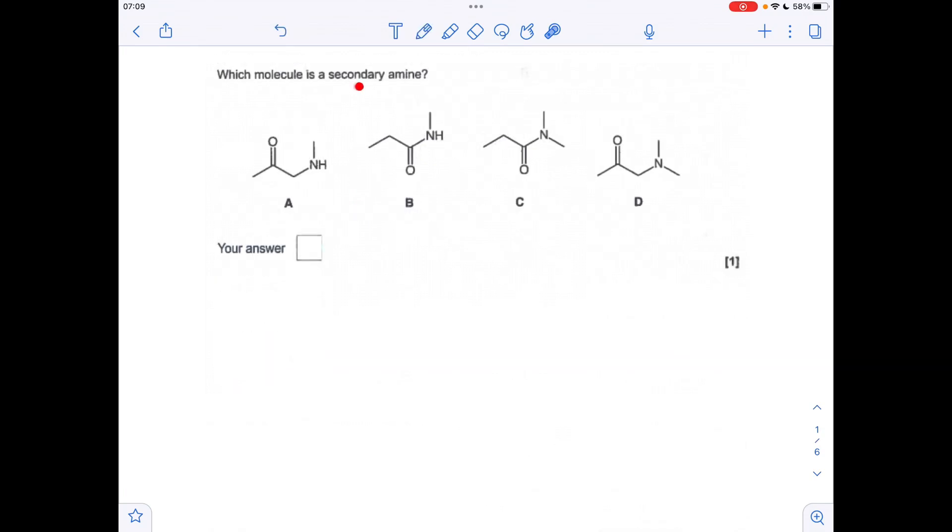Moving on to the next question. So a secondary amine. So we want a nitrogen that's bonded to two carbon groups directly. What we can't have is a nitrogen with a C-double bond O next to it. Because then that becomes an amide. So we'll run through the four of them. So A, nitrogen, two carbon groups. So that is a secondary amine. This is an amide. It's actually a secondary amide. It's another amide. But this one's a tertiary amide. And the last one's an amine. The C-double bond O isn't directly bonded to nitrogen. This is a tertiary amine. So the answer was A.